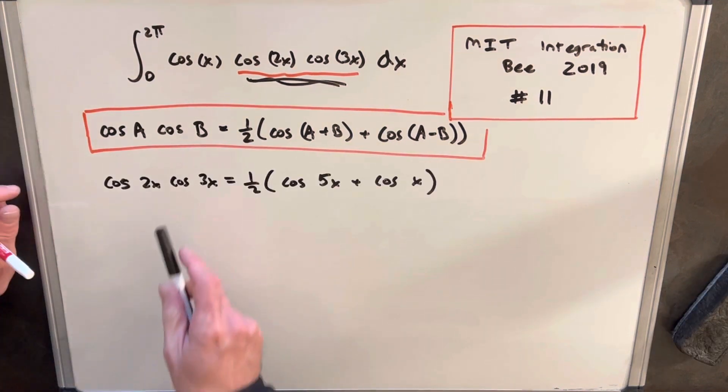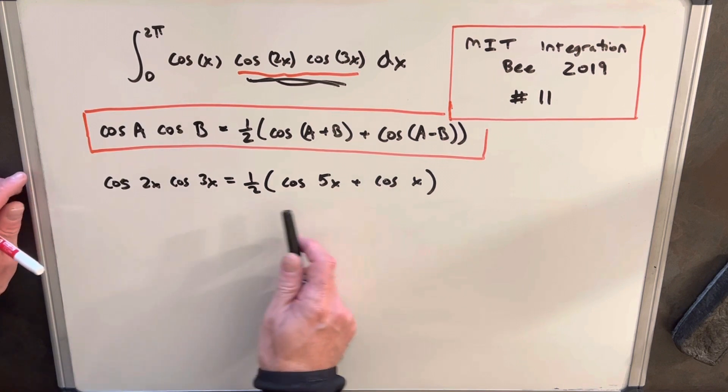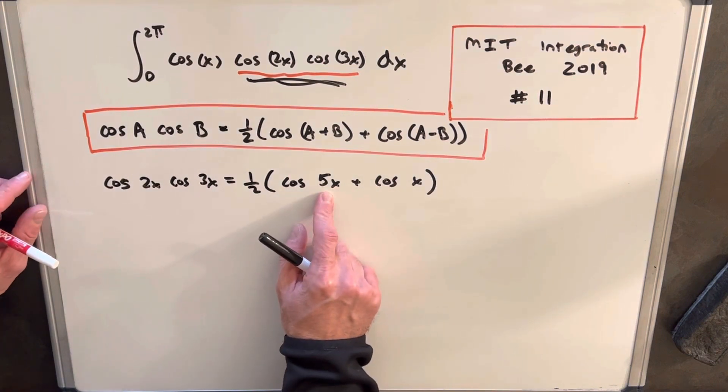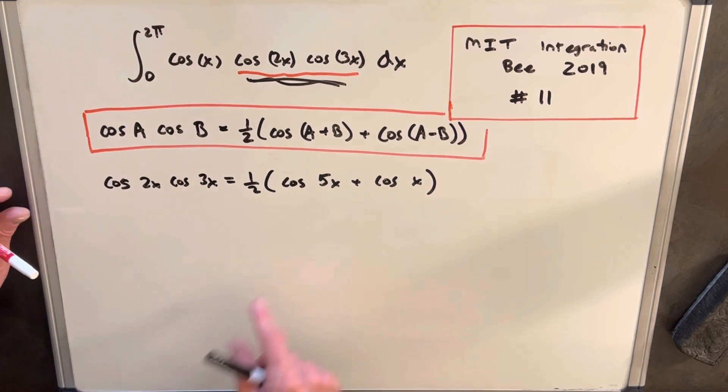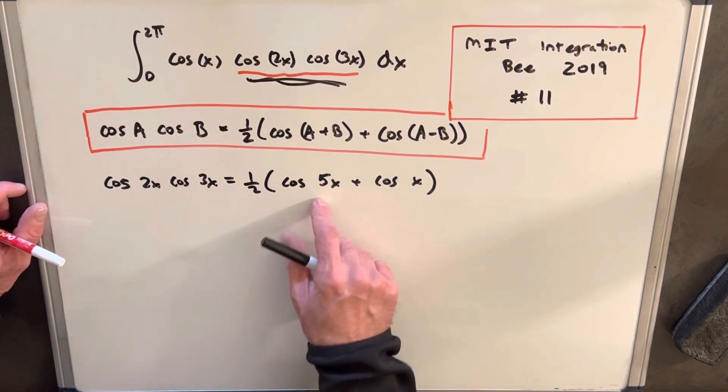So applying the formula, we have our cos 2x times cos 3x just as a half, the sum of the angles, which is cos 5x, and the difference of angles, which is cos of x. So now let's rewrite the integral with this plugged in.